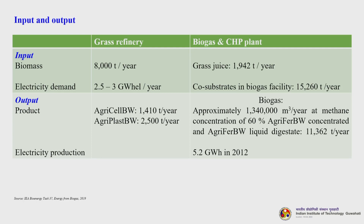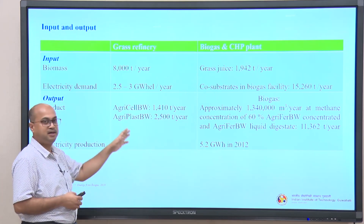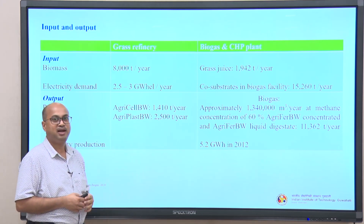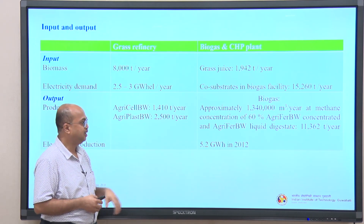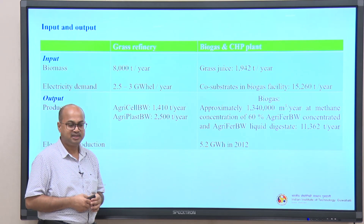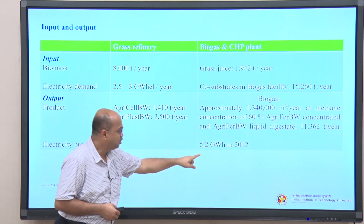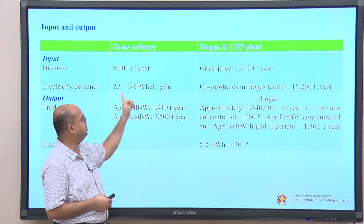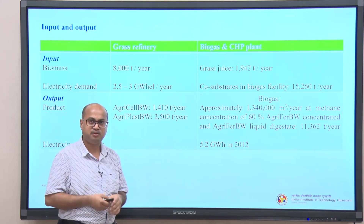The input-output for this plant: biomass input is 8,000 tons per year, electricity demand is 2.523 gigawatt hours per year. Grass juice required as feedstock for the digester is 1,942 tons per year, and co-substrates in the biogas facility are around 15,260 tons per year. Outputs are Agri-Cell and Agri-Plast products, biogas of approximately 1,340,000 cubic metres per year, and 5.2 gigawatt hours of electricity generation — of which 50 to 60 percent is utilized within the plant and the rest is sold to the electricity grid.